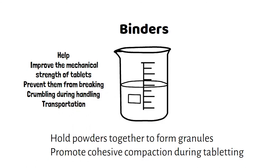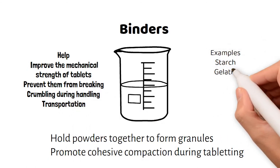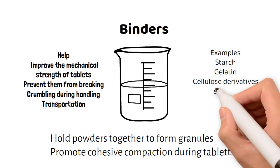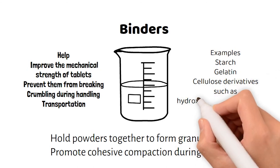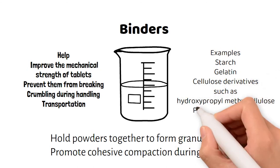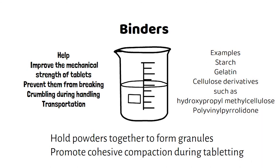Examples of binders include starch, gelatin, cellulose derivatives such as hydroxypropyl methylcellulose, and polyvinylpyrrolidone.